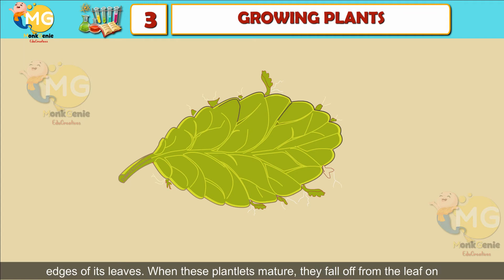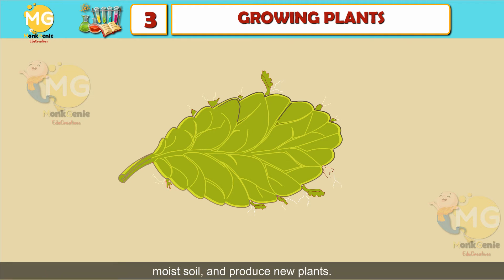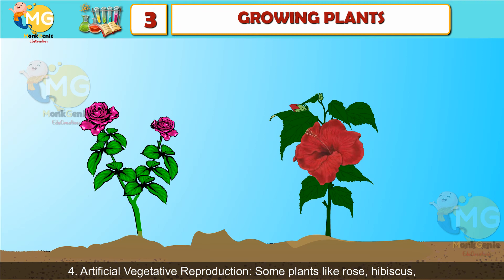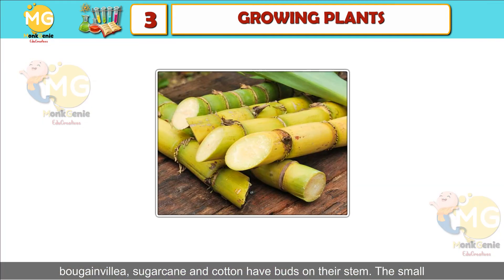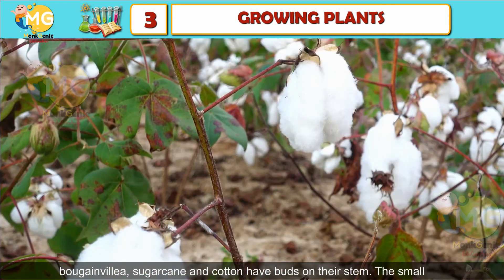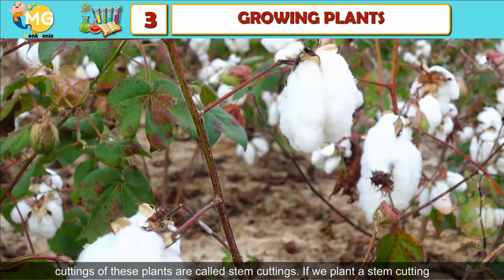New plants of onions grow from bulbs when they are planted in the soil. New plants from leaves: the bryophyllum plant produces plantlets along the edges of its leaves. When these plantlets mature, they fall off from the leaf onto moist soil and produce new plants.